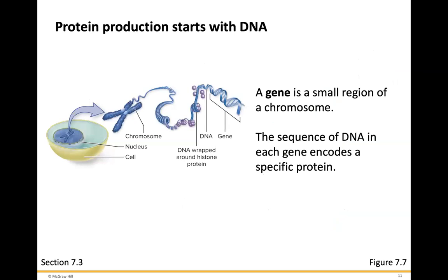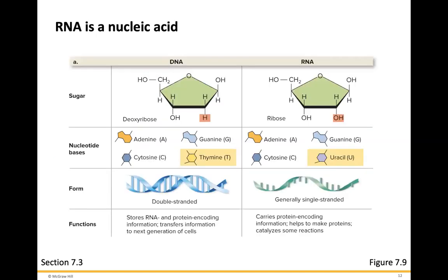Protein production — which is essentially the entire functional component of cells — starts with DNA. A gene is a small region of a chromosome. The sequence of DNA in each gene encodes for a specific protein. Now that we've talked about DNA, let's talk a little about RNA.